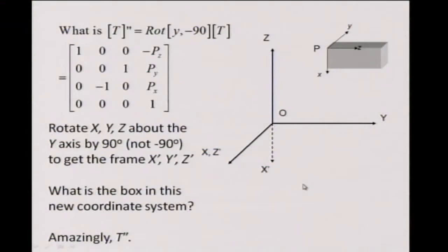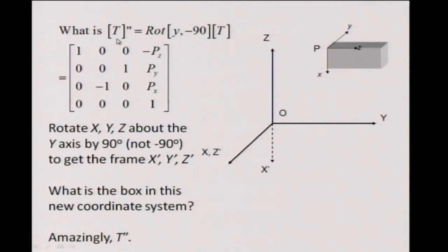This in itself is not the most interesting point. The very interesting question is: I post-multiplied the original transformation matrix by the rotation matrix. I could have pre-multiplied also. But if you pre-multiply, you get a different matrix which is not T prime — it is some other matrix which I am calling T double prime. We know already that pre-multiplying and post-multiplying are not identical operations; they are not commutative. So the question is: what is this matrix T double prime?